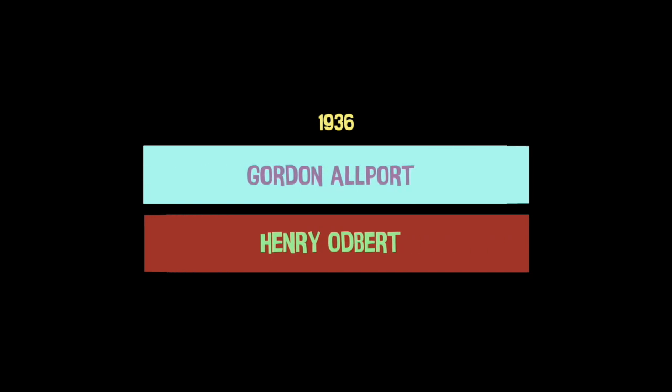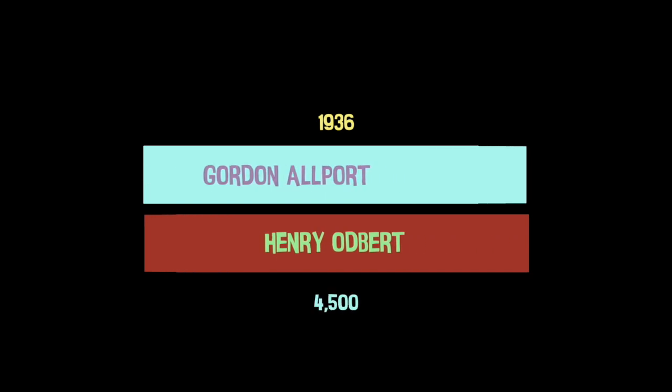This first came into existence in 1936, wherein two psychologists formed a list of 4,500 terms relating to personality traits, which was narrowed down to 16 in the 1940s. Robert McRae and Paul Costa then created the model consisting of five primary factors of personality. It is regarded as the most widely accepted theory of personality today.